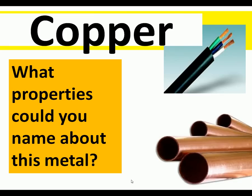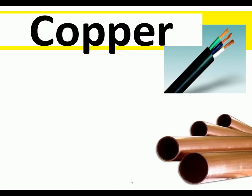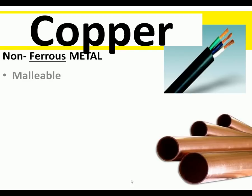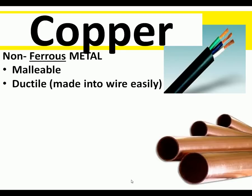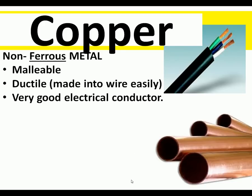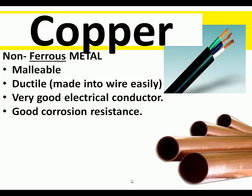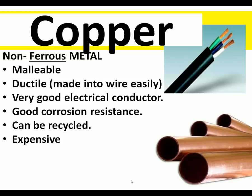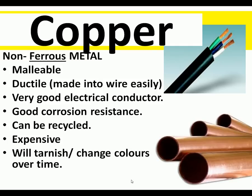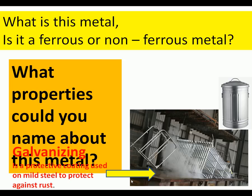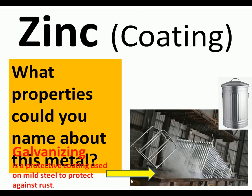Copper is another common non-ferrous metal. It is malleable — easily shaped and drawn into wire and tubes — and is a very good conductor of electricity, so it's used for wires and all kinds of electronic products. It can be recycled but is very expensive, being in high demand for electronics. It does tarnish but it doesn't rust.